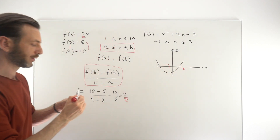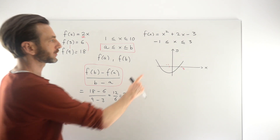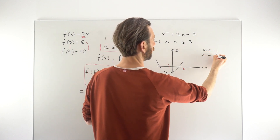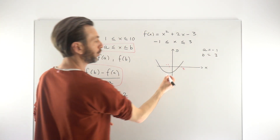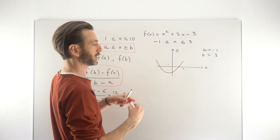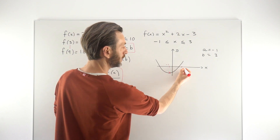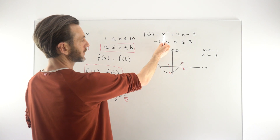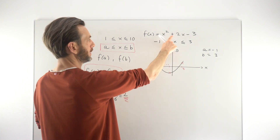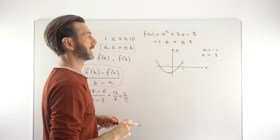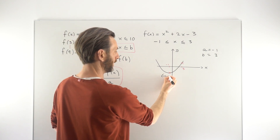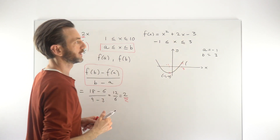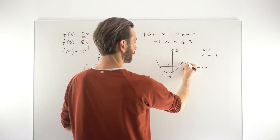We find the y-coordinates that go with those x-values — those are our a and b values. So a equals minus 1 and b equals 3. We want to work out f of a and f of b, the y-coordinates of these points. Putting minus 1 into the function: (−1)² is 1, minus 2 times (−1) is minus 2, so 1 minus 2 minus 3 gives minus 4. Putting 3 in: 3² is 9, plus 2 times 3 is 6, so 9 plus 6 minus 3 gives 12. So the points are (−1, −4) and (3, 12).